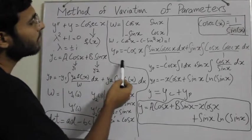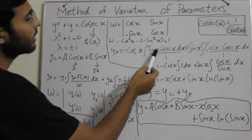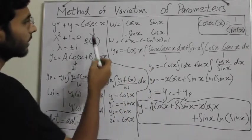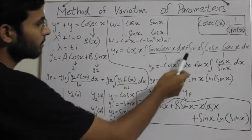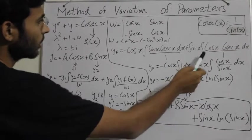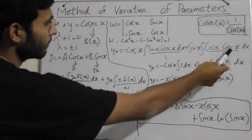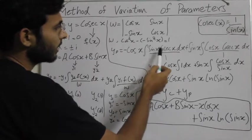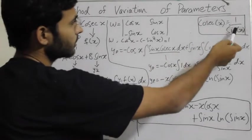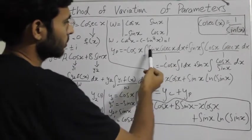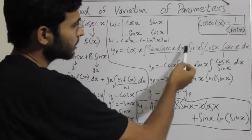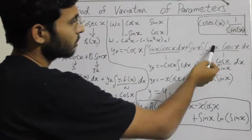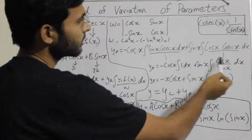I solve further for yp and I get the answer: minus cos x integral sin x cos x, which is f of x, over omega which is 1. Upon simplifying this, that becomes cos x integral 1 over sin x, which is cos x over sin x dx.